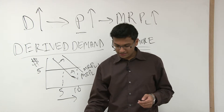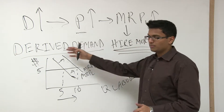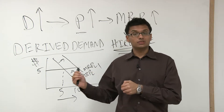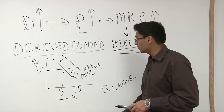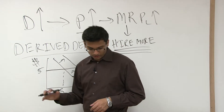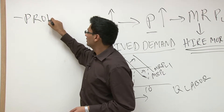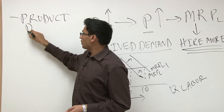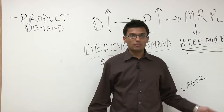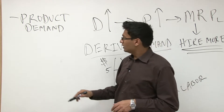What else can drive demand? Let's look at the factors that determine demand. First is product demand — pretty straightforward. If your product is demanded more, the demand for labor is going to go up because you need more people to make more money.